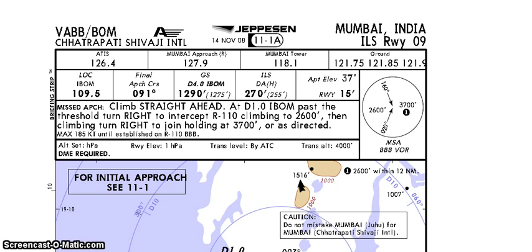ILS frequency 109.5 set on secondary. Final approach course 091. Glide slope check altitude at 4 ILS DME is 1290 feet. ILS decision altitude 270 feet. Derived decision altitude 320 feet, set in minima. Airport elevation 37 feet. Runway elevation 15 feet.